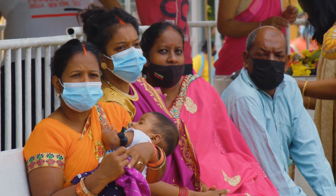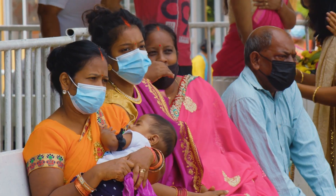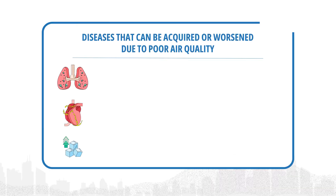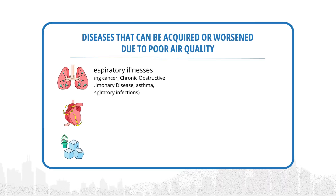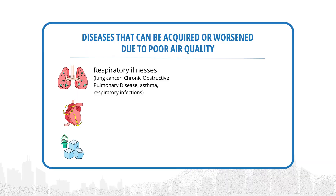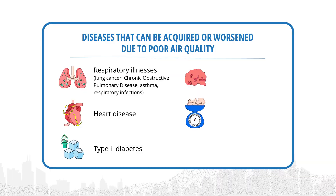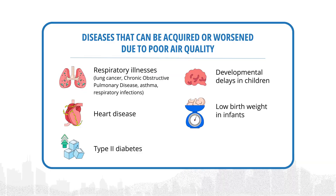The elderly and children are the most vulnerable to the effects of air pollution. It can worsen respiratory illnesses like lung cancer, COPD, asthma, and respiratory infections, as well as heart disease and type 2 diabetes. Additionally, poor air quality can lead to developmental delays in children and low birth weight in infants.